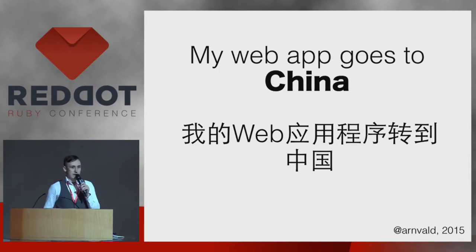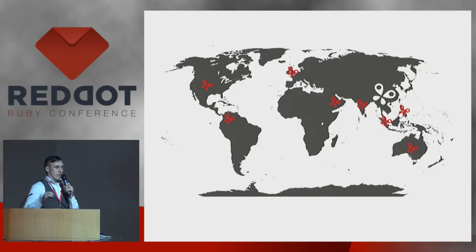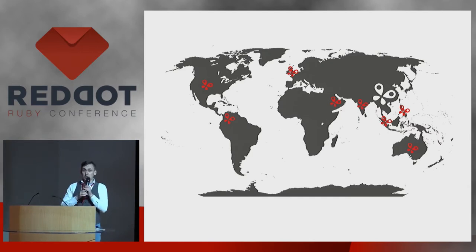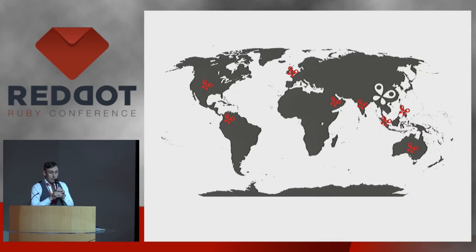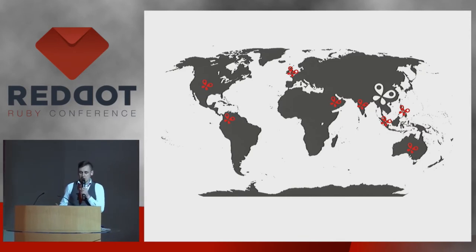For the last few months, I've been working on a product called Caligo.com, which is an online travel agency. We have reached so far a lot of markets all over the world, but there are some markets that are particularly hard to reach — hard because of various differences that we, as English-centred and Western-culture-centred people, are not aware of. One of these markets is China, and there are a few things you have to consider if you want to launch your web application there.